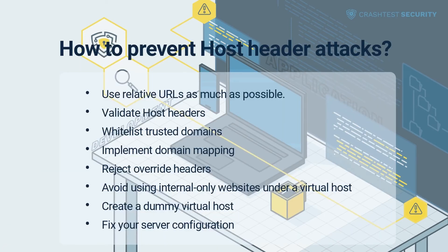Depending on your configuration type, there are different ways to prevent host header injections. The most straightforward approach is to distrust the host header at all times and not use it in server-side code — this simple change can eliminate the possibility of a host header attack. If you need to use the host header, consider using relative URLs as much as possible. If you must use absolute URLs, such as for transactional emails, the domain must be specified in the server-side configuration file and taken from there, eliminating the possibility of password reset poisoning.